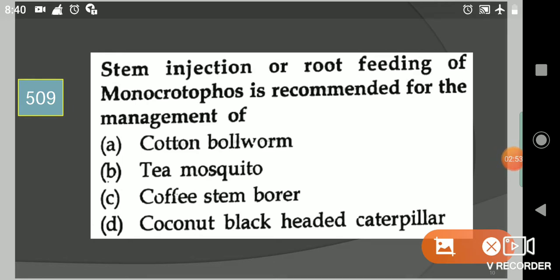Next question: Stem injection or root feeding of monocrotophos is recommended for the management of? Your options are cotton bollworm, tea mosquito, coffee stem borer, coconut black-headed caterpillar. Your answer is option D, coconut black-headed caterpillar.